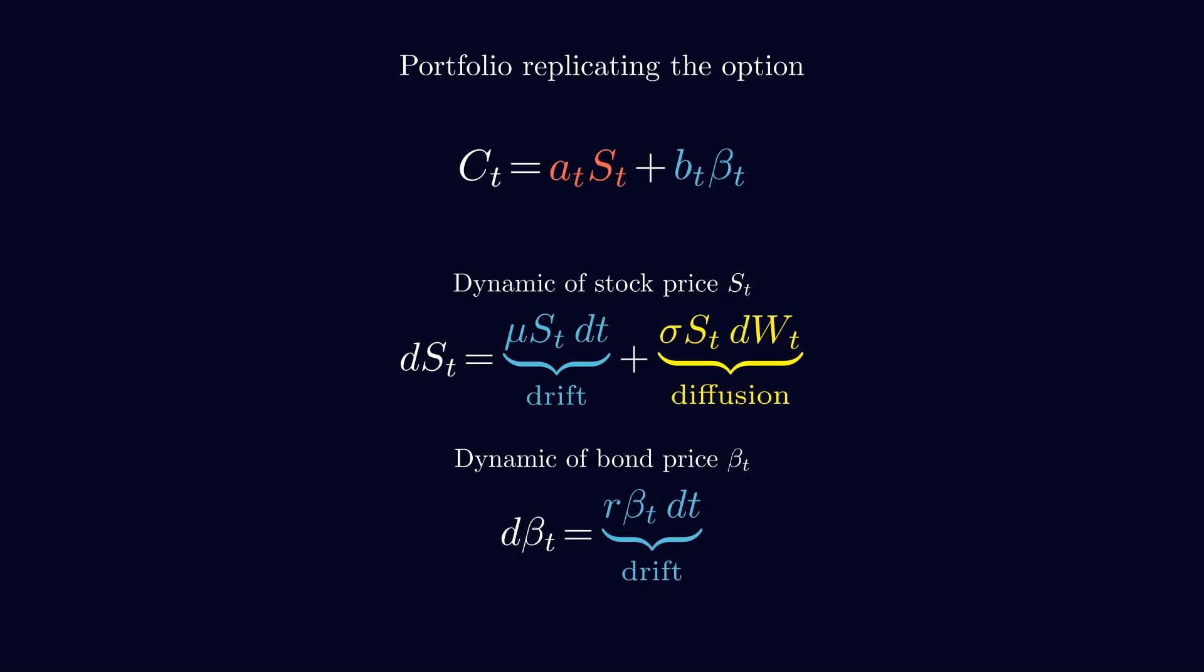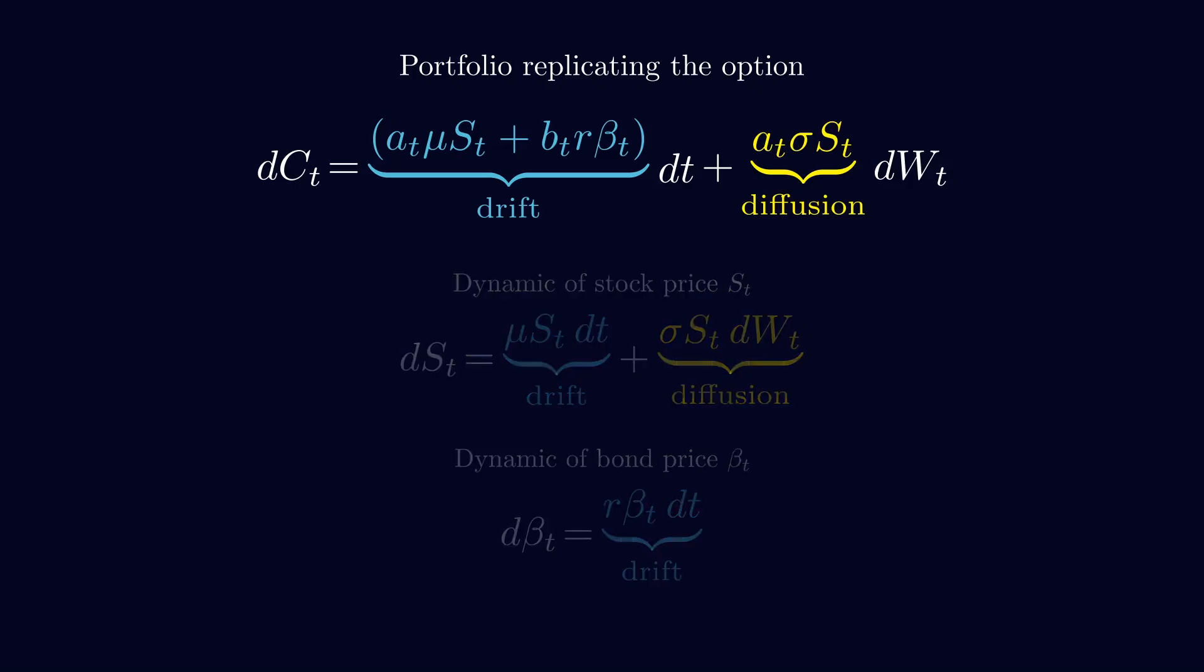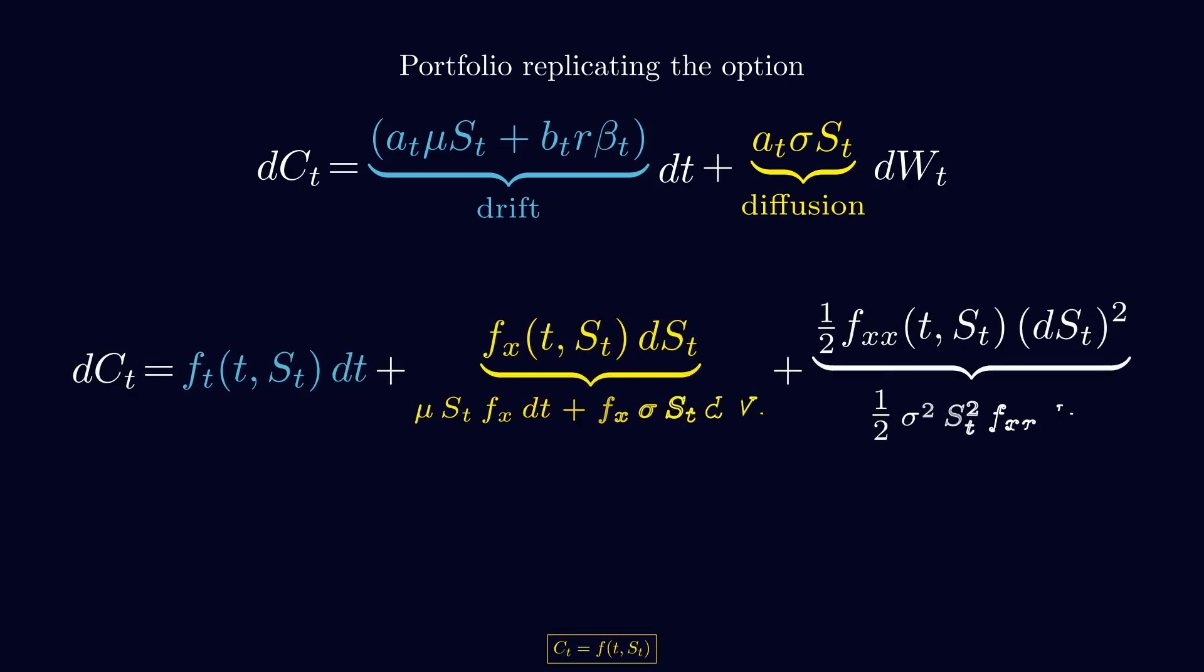Knowing how both pieces move, we can describe how the whole portfolio moves, and by rearranging, we can separate its drift, the predictable part, from its diffusion, the random part. There's also another way to write the portfolio's dynamic with the Ito's Lemma, exactly like we used earlier. So, let's use it on the option value.